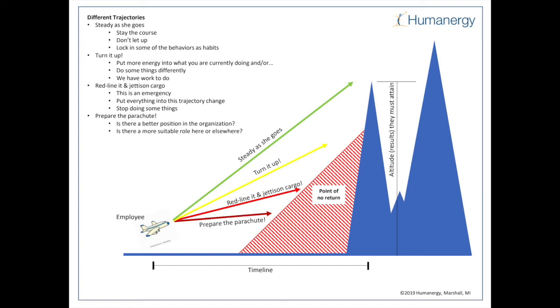So this is really all we can do - get ready to bail out of the airplane because there's no way we can red line it, jettison enough cargo to get us to the top of that mountain.